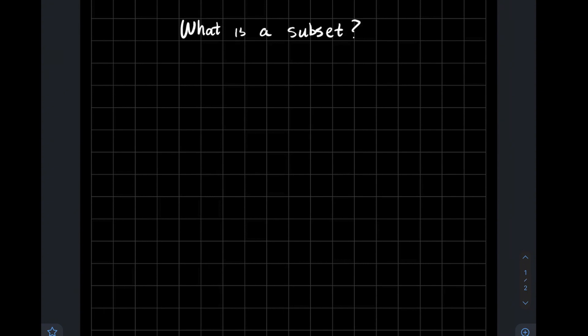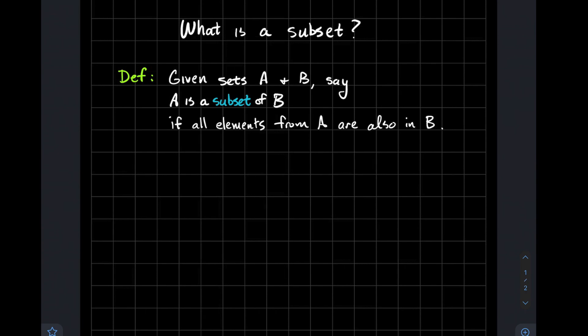This video we're going to define what a subset of a given set is. So here's the definition. If you're given two sets A and B, we would say that A is a subset of B if all the elements from A are also elements in B.